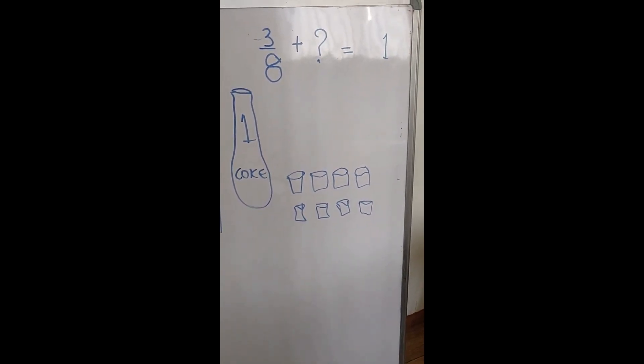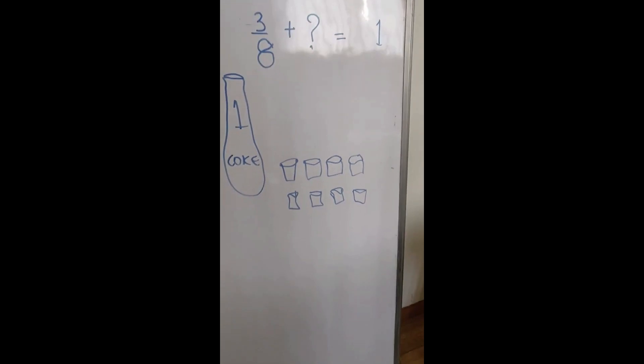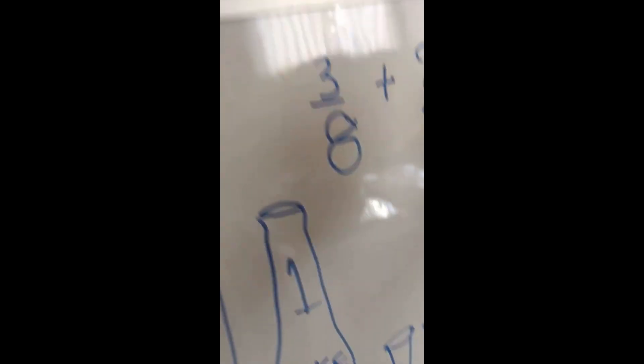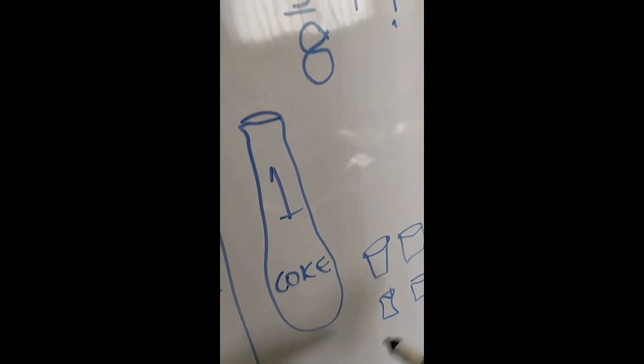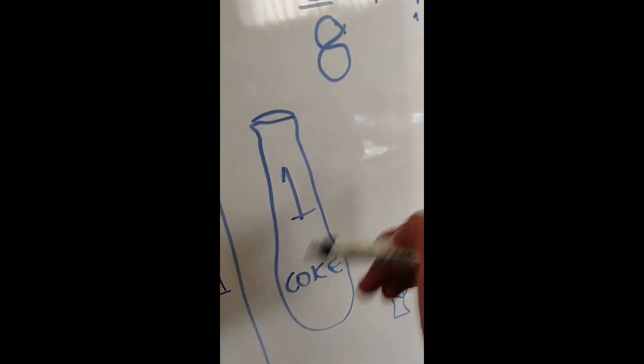1 fifth? 1 fifth would mean 1 glass out of 5 glasses. Are we doing 5 glasses? How much coke was in the bottle? 8. So that can't change to 5. You get that?